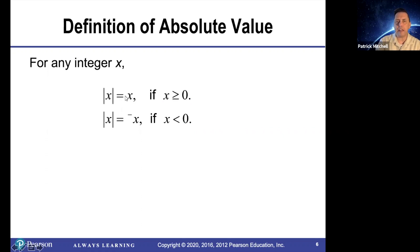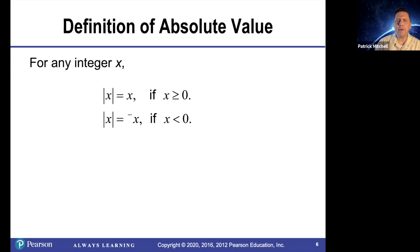The number doesn't change. However, if x is negative, then the absolute value of x is the opposite of x. This is a confusing definition to a lot of people, and I think part of the reason is that we use this symbol to mean three different things.